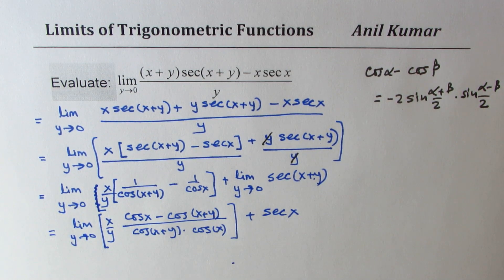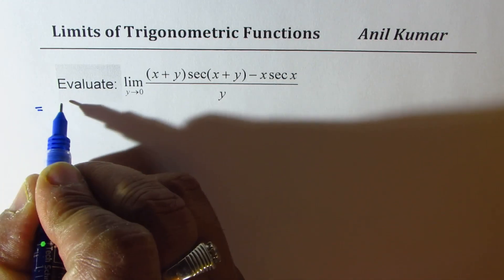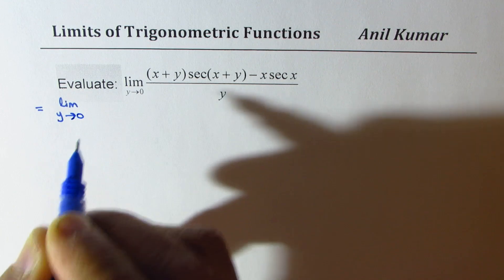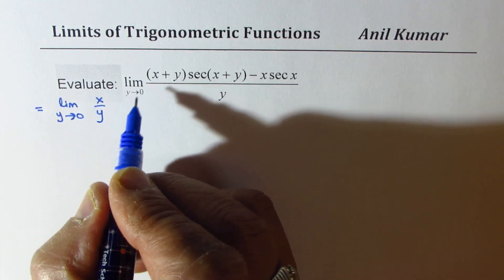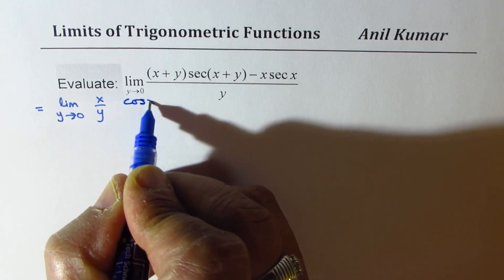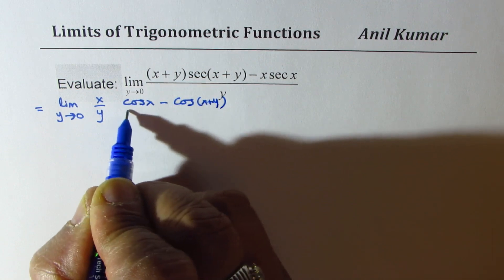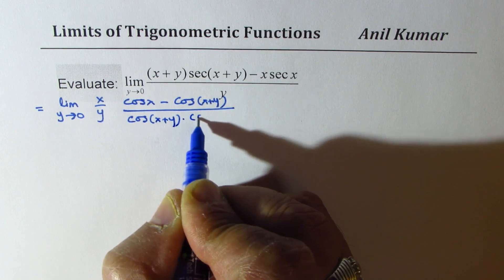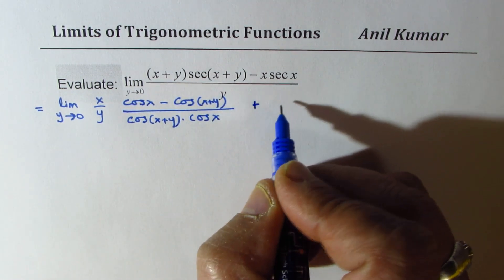Let's take it to the next page and then do the needful. So let me rewrite the expression which was equal to limit y approaches 0, x over y times cos of x minus cos of x plus y divided by cos of x plus y times cos x plus secant x.